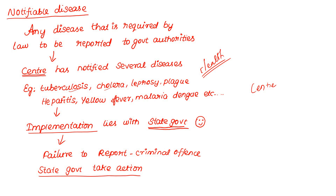The state government is the authority for each state. For example, Tamil Nadu's CM declared COVID-19 as a Notifiable Disease around March 15th. The implementation is done by the state government. If you are in the community and do not report, it is a criminal offence.